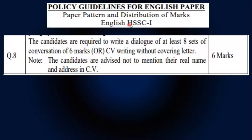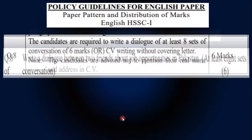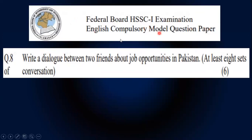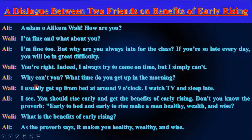Policy guidelines for the English paper: paper pattern and distribution of marks. Candidates are required to write a dialogue of at least 8 sets of conversation for 6 marks — Question number 8. Note that the greeting 'Assalamu Alaikum / Wa Alaikum Assalam' is not included in the count of these sets; you are still required to write eight full sets.